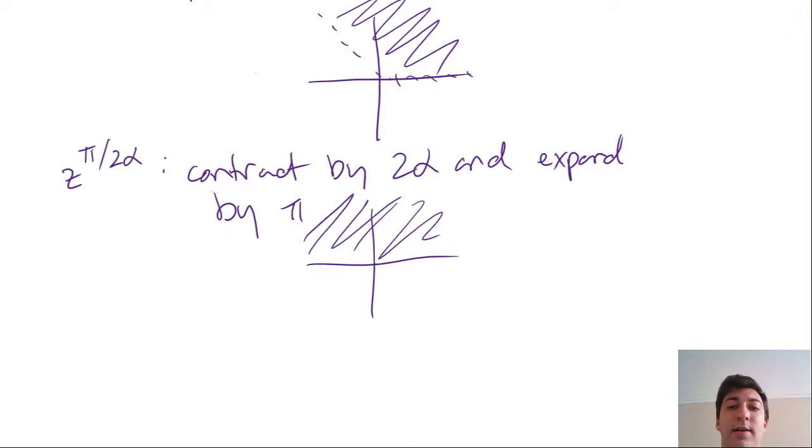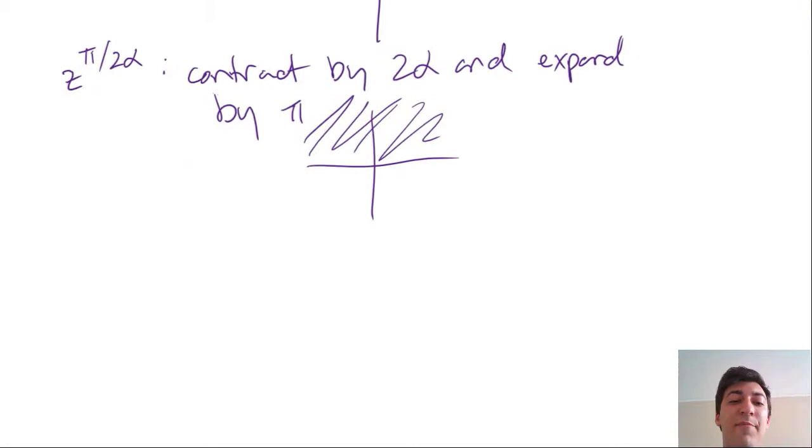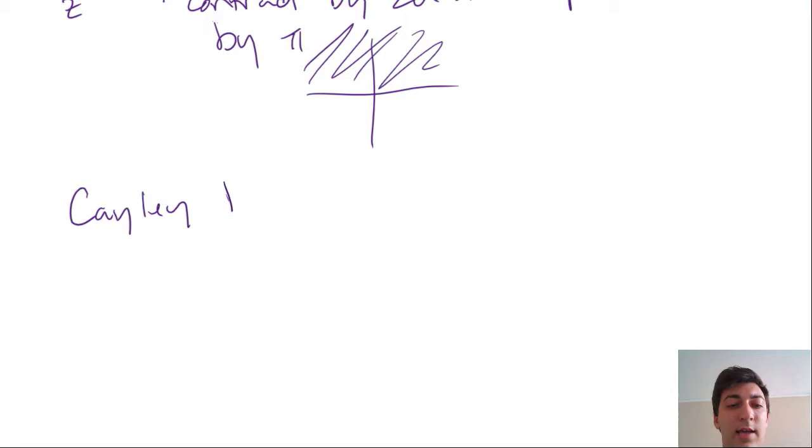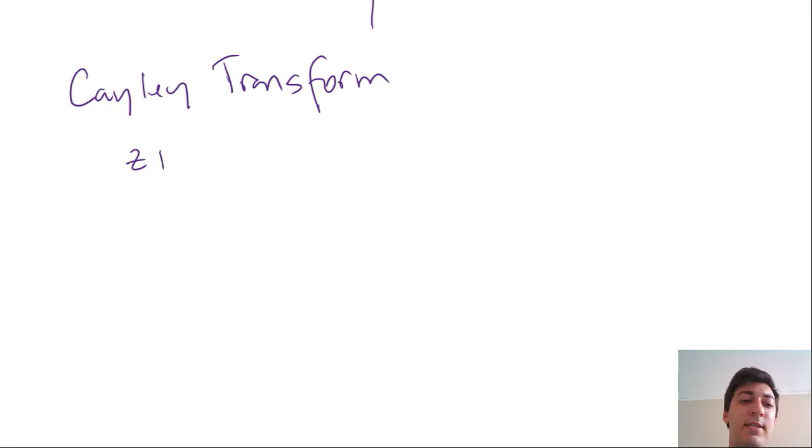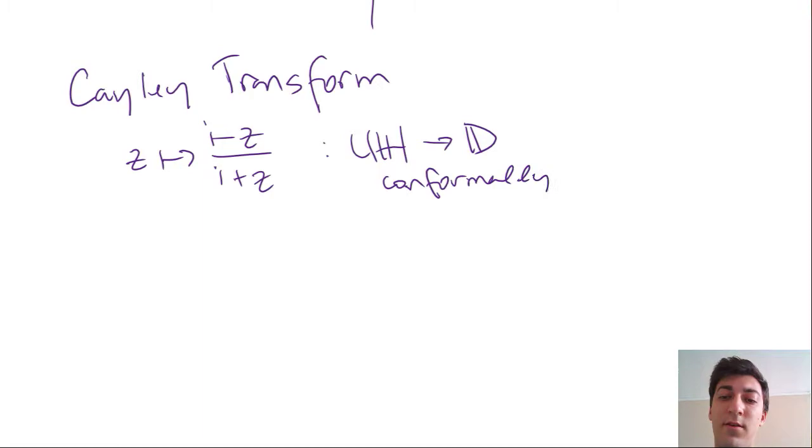So now that we have the upper half plane, we can use the Cayley transform. A good source for this would be maybe Wolfram Alpha has some documentation on the Cayley transform. Just to recall it for you, it's this map that takes z to i minus z, and i plus z on the bottom. That takes the upper half plane to the disk conformally.